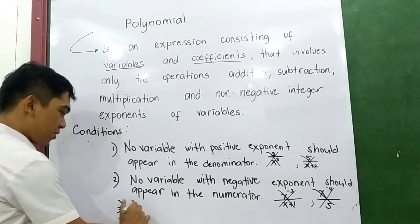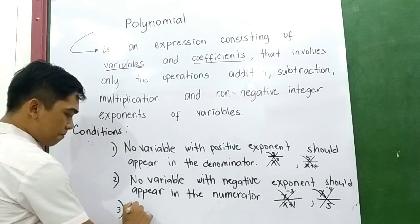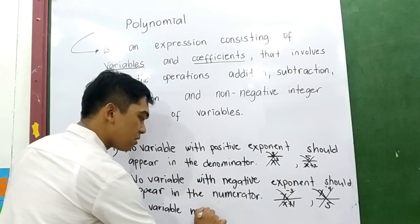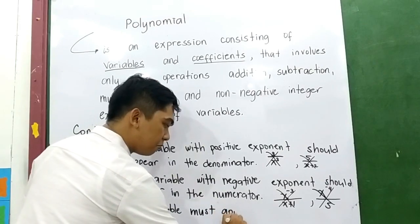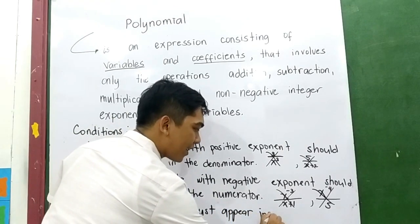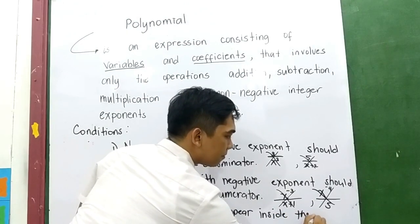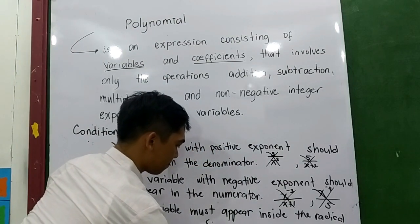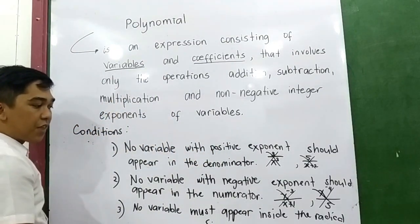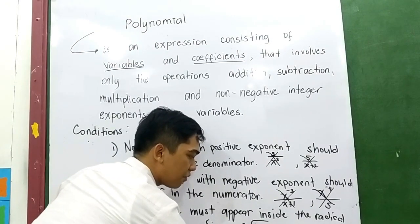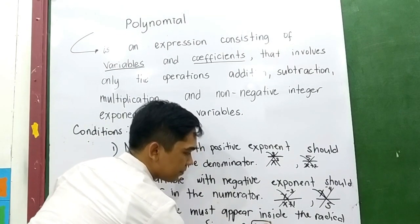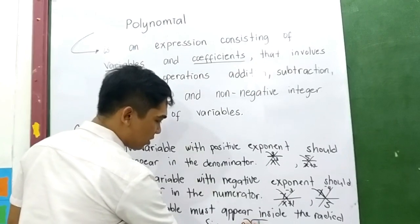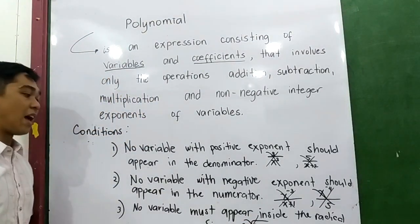Third condition: no variable must appear inside the radical sign. If the example is the cube root of (x plus 2), x is located inside the radical sign. That means this is not an example of a polynomial.